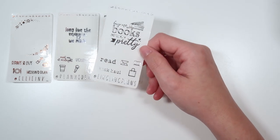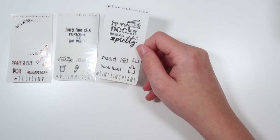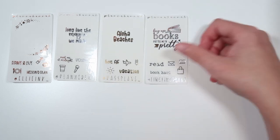Next we have Leanne's freebie. Put Leanne in the notes. She has buy me books and tell me I'm pretty. And then read and book haul are the scripts. Then we have the envelope, the book, and the shopping bag.